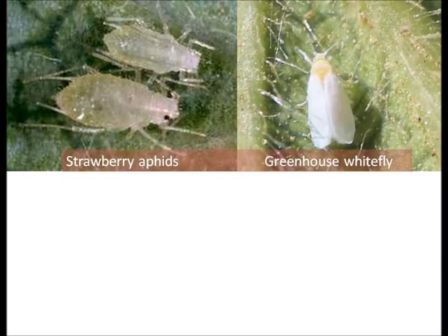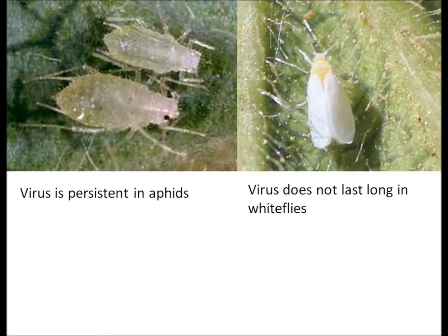Greenhouse whitefly and strawberry aphid are important vectors that contribute to this disease. Once acquired, viruses persist in aphids but are short-lived in whiteflies.